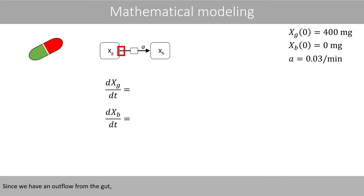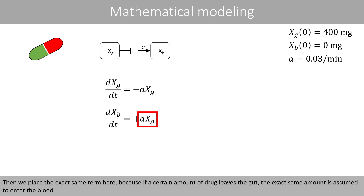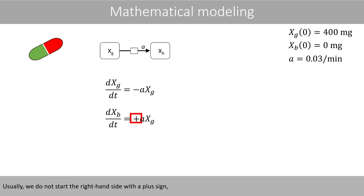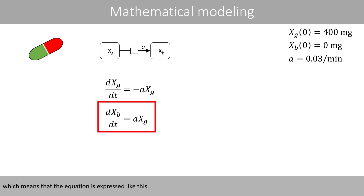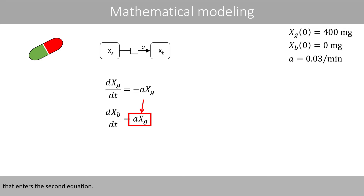Since we have an outflow from the gut, we need a minus sign in the gut equation. Since we have an inflow of the drug into the blood, we need a plus sign in the blood equation. We place the term A times xg here, because a certain proportion of the drug is absorbed per minute. We place the exact same term in the blood equation, because if a certain amount of drug leaves the gut, the exact same amount is assumed to enter the blood. Note that we do not start the right-hand side with a plus sign, so the equation is expressed accordingly.